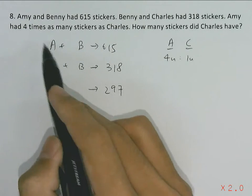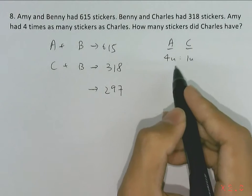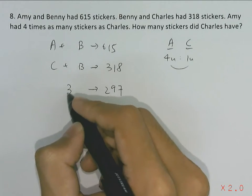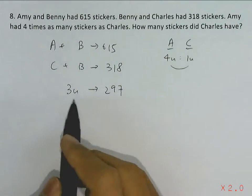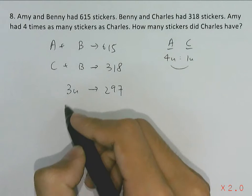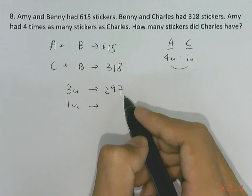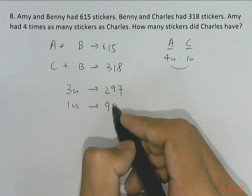Since the Benny stickers will cancel out each other, the difference between Amy and Charles, between four units and one unit, is three units. So three units equals 297, meaning one unit equals 297 divided by 3, giving us 99.